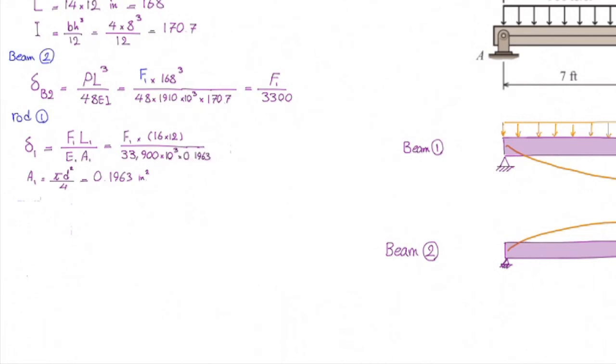Alright. Once we plug that into this equation, delta 1 would be F1 divided by 34,660. Alright. So, now we have determined deflection in the first beam, deflection in the second beam, and elongation of rod number 1.